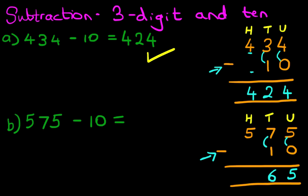And lastly, we're going to do the hundreds. We've got 5 minus 0. Well, the answer is 5. And we have our answer.